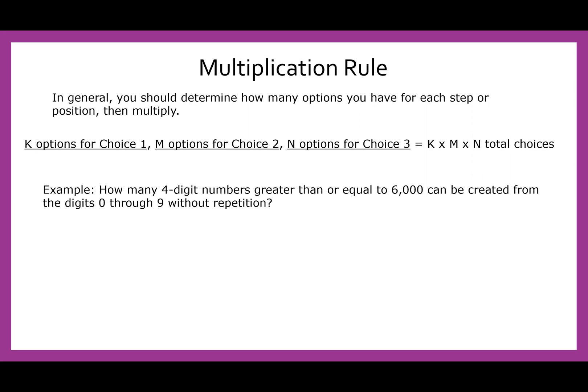So let's look at this example. How many four digit numbers greater than or equal to 6,000 can be created from the digits zero through nine without repetition? So we have four digits, one, two, three, four positions need to be filled. We can think of this as event one, event two, event three, and event four.